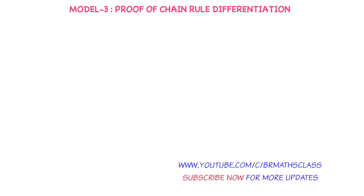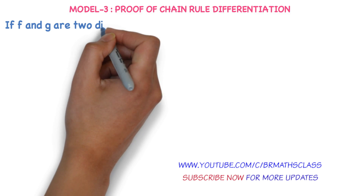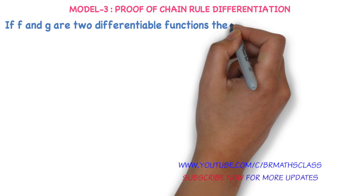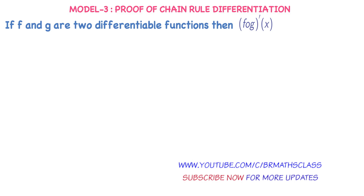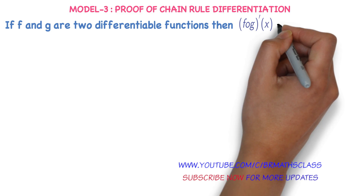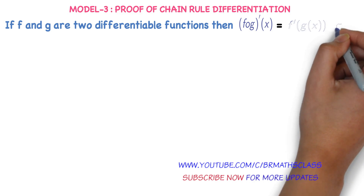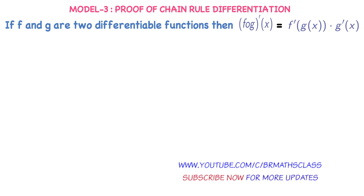This is the proof of the derivative of a composite function — simply, the proof of Chain Rule. If f and g are two differentiable functions, then the derivative of their composite function f∘g is denoted by (f∘g)'(x), and it is defined as f'(g(x)) · g'(x).